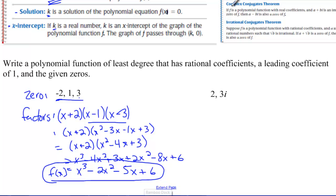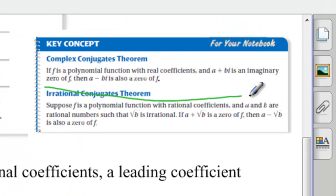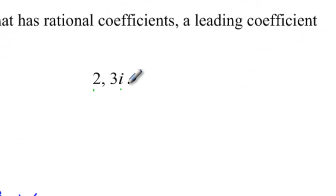Another problem that's like this is giving us two and three i as zeros. Now I know it's kind of hard to see this, but there's a complex conjugates theorem that basically says that if a plus bi is an imaginary zero, then a minus bi is also a zero. And so in addition to three i and two, we also know that negative three i is a zero.